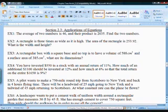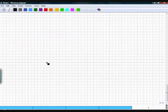Example 3 says a rectangular box with a square base. That's very important that you see that it does have a square base. And no top is to have a volume of 588 centimeters cubed. The surface area is 385 centimeters squared. What are the dimensions? Before we go into this, I need to review volume and surface area.